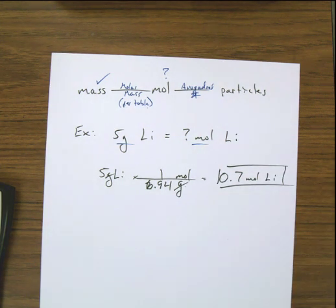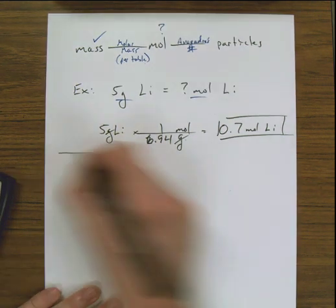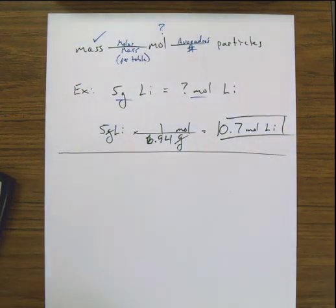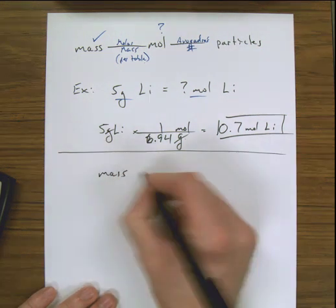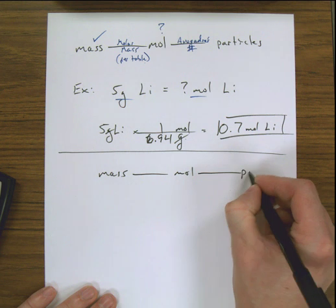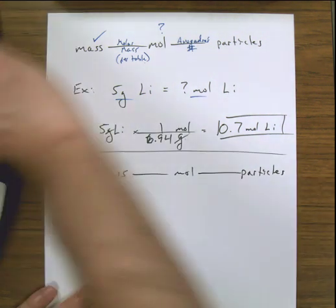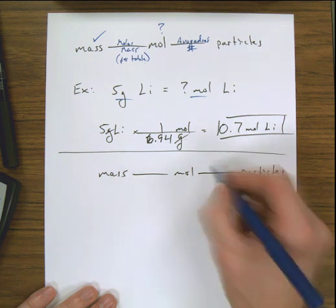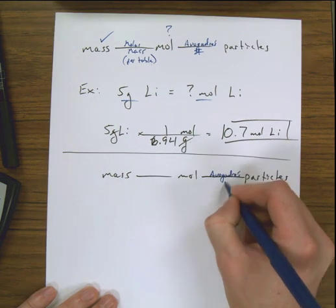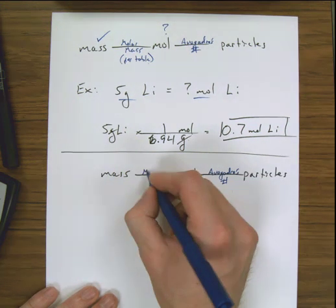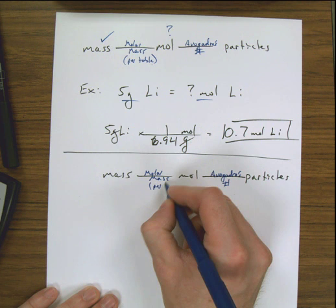Now let's compare this to a problem with two steps. I'll write out the mole road one more time: mass to moles to particles. I recommend you write this down every single time until you have it memorized. Remember — between moles and particles you're using Avogadro's number; between mass and moles you're using the molar mass, and that information comes from the periodic table.